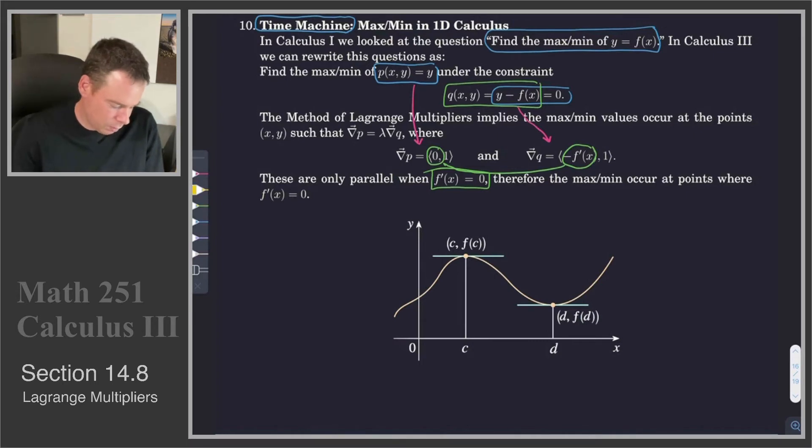But we can carry this a little bit further. We can look at the corresponding picture. This was the picture we had in Calc 1 that said, you know, you're interested in the maximins? Look for the places where there's a horizontal tangent. Let's see why this is the case when we look at it in terms of Lagrange multipliers.